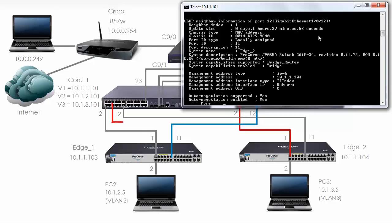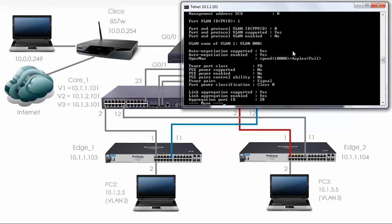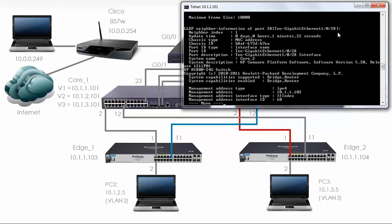We also have a connection on port 1.0.12 to a ProCurve switch named H2, connected to port 11 — correct as per the diagram. We also have our two 10GB interfaces: port 27 connected to core 2 on port 27, and port 28 connected to core 2 on port 28.